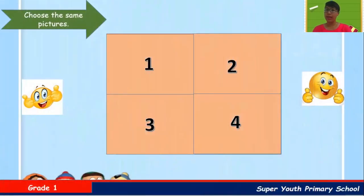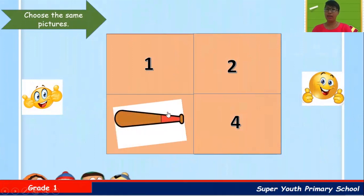I have a small game for you. You can see four numbers. Behind the numbers, I have a picture. You open the numbers and find the same picture. Are you ready? Let's go. I open number three — it's a bat.